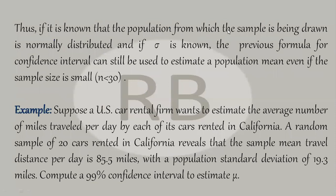If it is known that the population from which the sample is being drawn is normally distributed, and if sigma is known — remember, sigma is known in all these cases — then the previous formula for confidence interval can still be used to estimate the population mean even if the sample size is small.